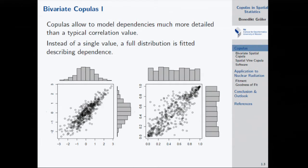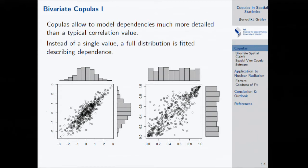In the spatial case it's the same: we always look at pairs of locations — the distribution at location s1 and at location s2 — and want to know how these two depend on each other. Instead of describing dependence by a covariance matrix, we can replace it with a copula. Kriging does the same thing, but kriging always assumes the copula being used is Gaussian.